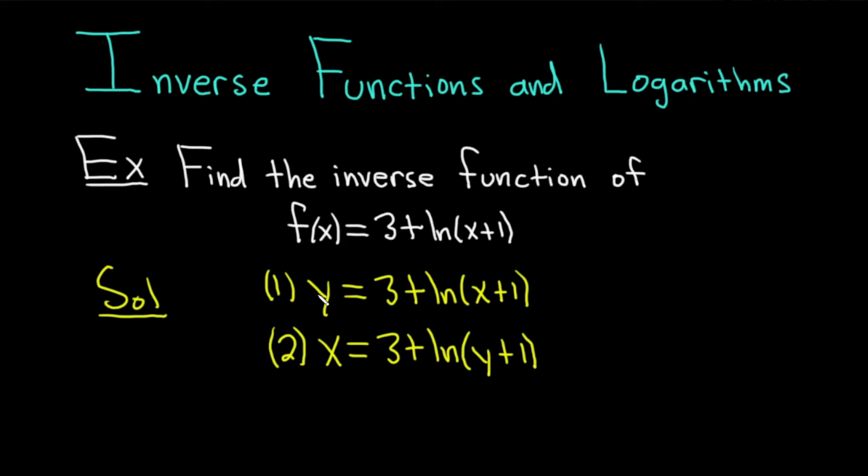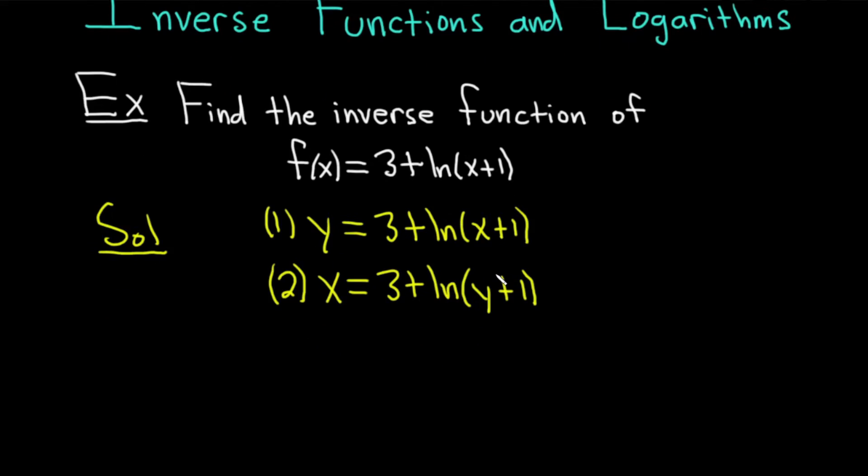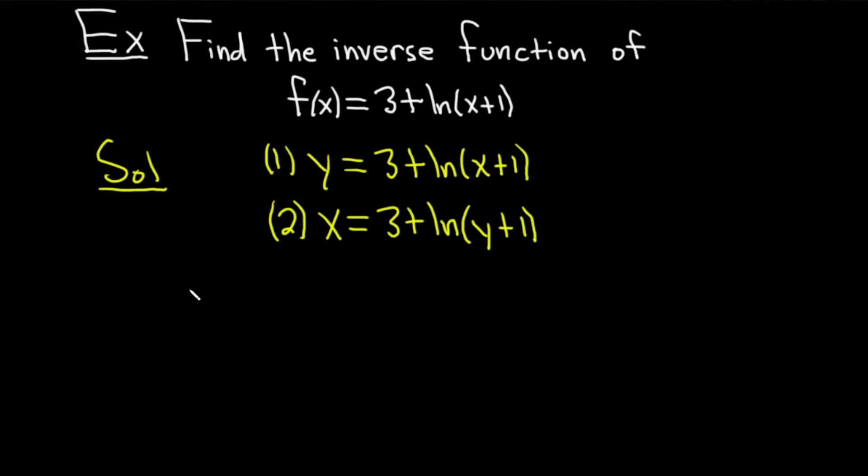So recap. First step, just replace f(x) with y. Second step, just switch your variables. y becomes x and x becomes y. The third step is the hardest step. We actually have to solve for y. Step 3 is the one where we solve for y. So to solve for y, we're going to start by isolating the natural log of y+1, because there's a y inside the natural log.